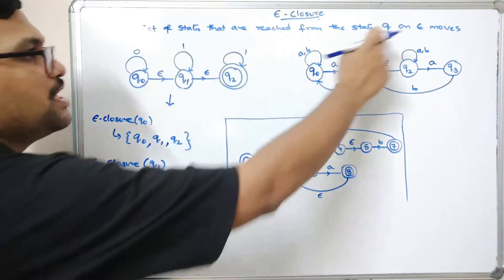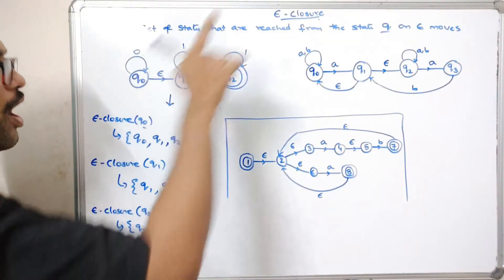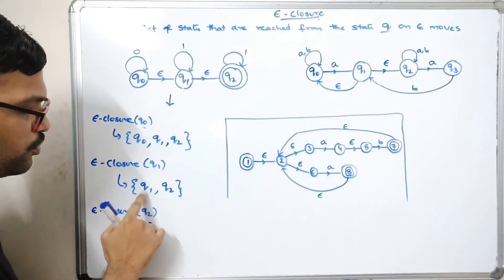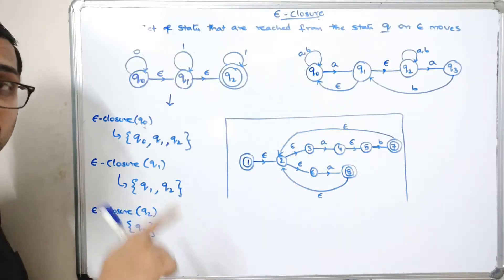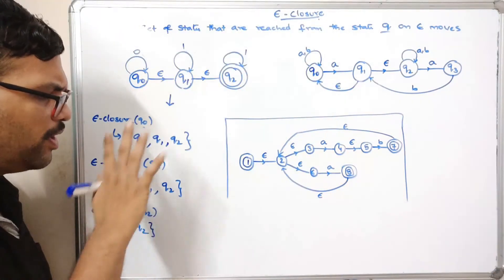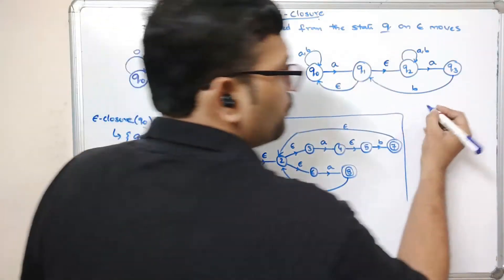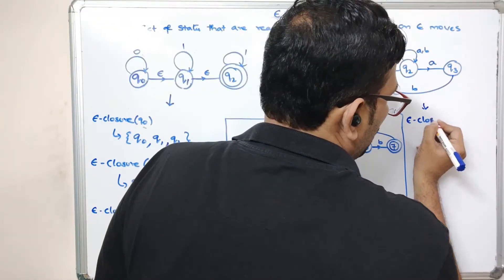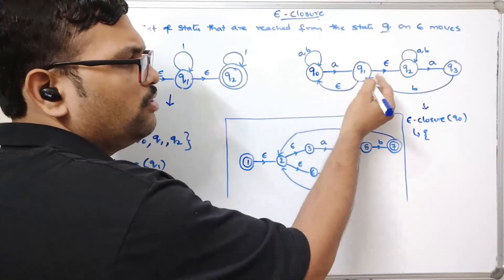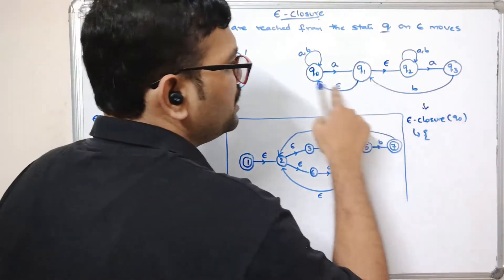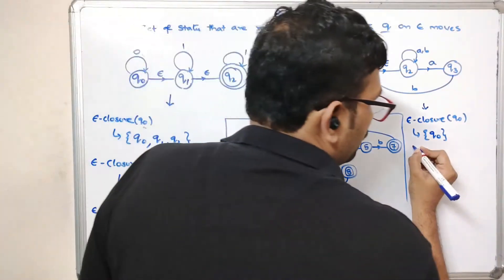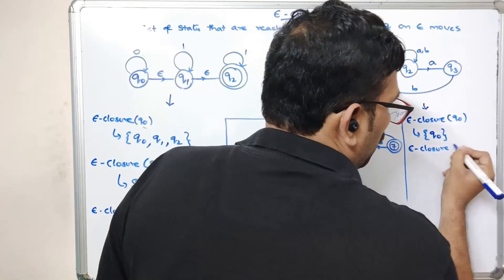To recap example 1: q0 on epsilon moves can reach q0, q1, and q2; q1 on epsilon moves can reach q1 and q2; q2 on epsilon moves can reach only q2, since every state has the self-transition on epsilon. Now for the second example, epsilon closure of q0: from q0 there are no epsilon moves, so by default it is just {q0}.